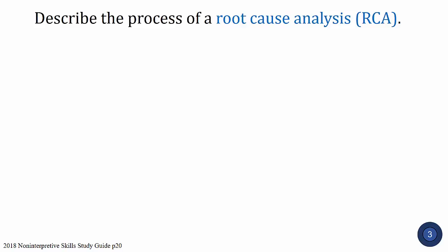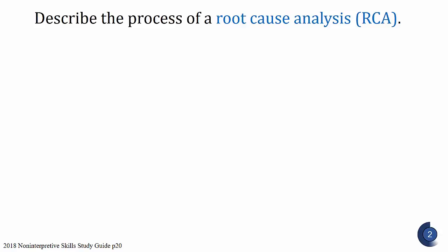Next question: describe the process of a root cause analysis. When an event occurs, it should begin with data collection to create an objective narrative of the event — find out what happened. It's based on review of the medical record and interviews with individuals involved. A multidisciplinary team should analyze the sequence of events leading to the error. The goal is to identify how the event occurred — the active errors — and the underlying conditions that contributed — the latent conditions. Focusing on the latent conditions is more likely to prevent recurrence than focusing on the active error alone, since serious adverse events are almost never the result of a single cause.